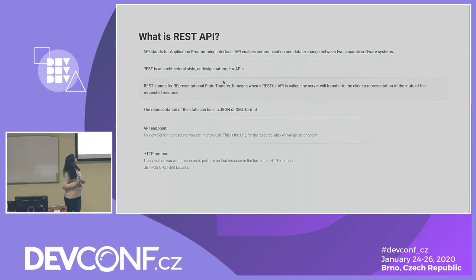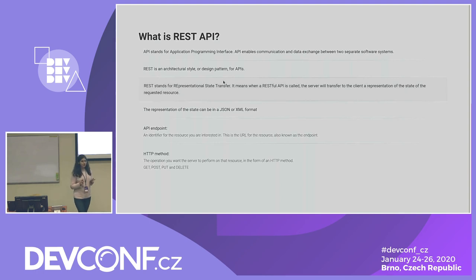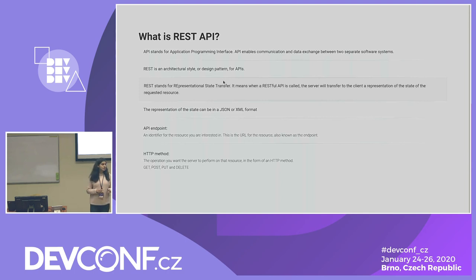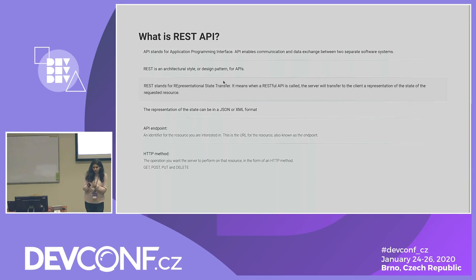What is REST API? API stands for Application Programming Interface. API enables communication and data exchange between two separate software systems. You must be familiar with the process of booking airline tickets. If you're using an online service portal that aggregates information from different airlines, the portal such as Kayak or Experia is interacting with different airlines' APIs to get you all the information at one place.